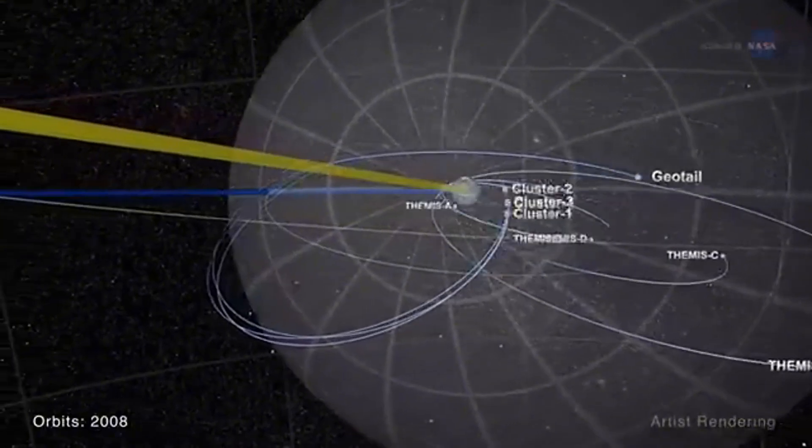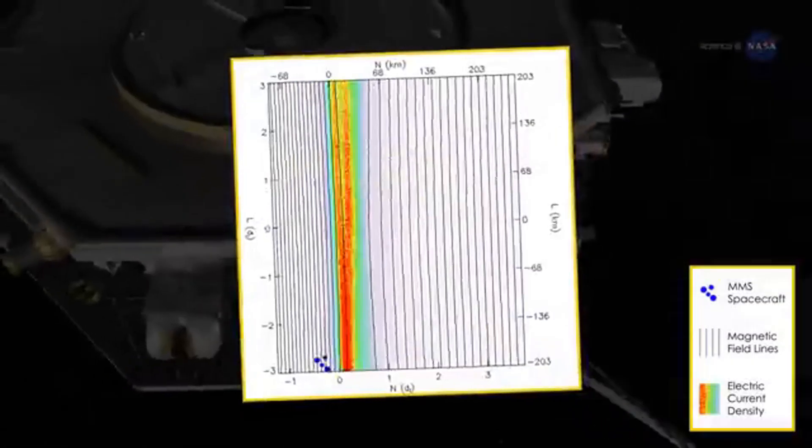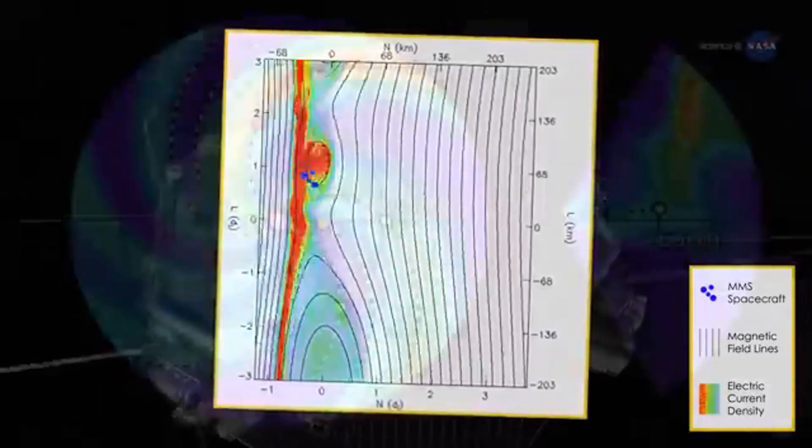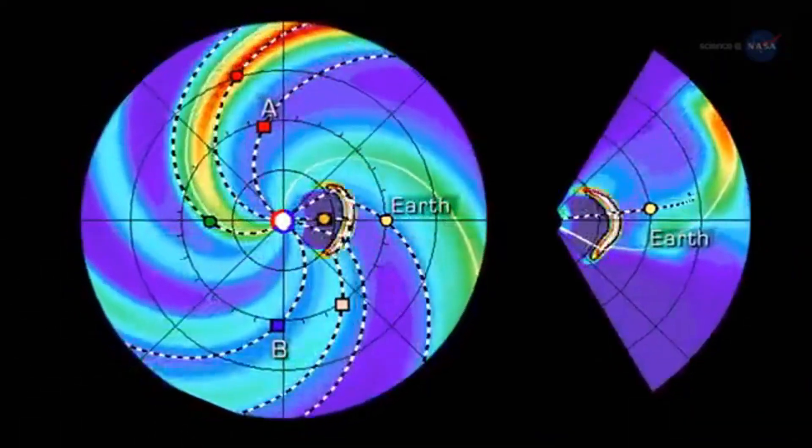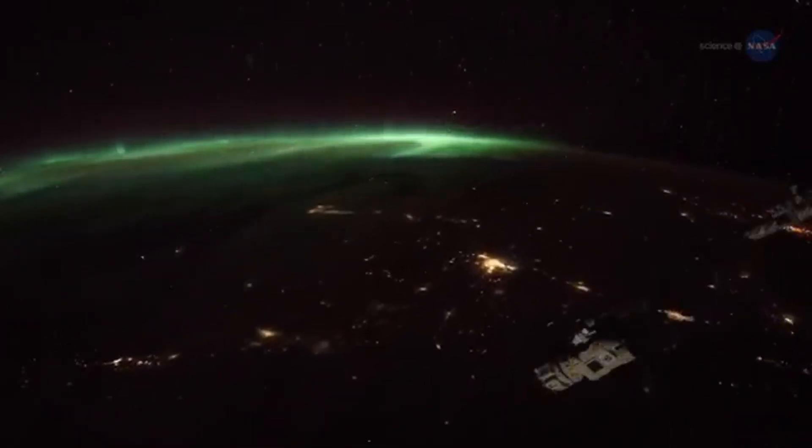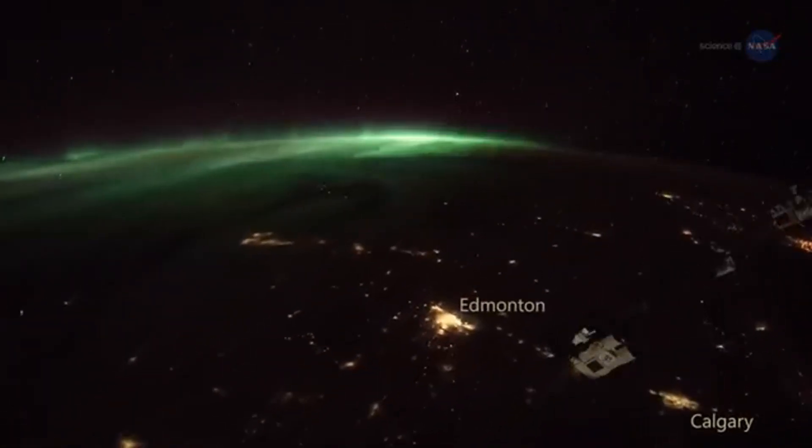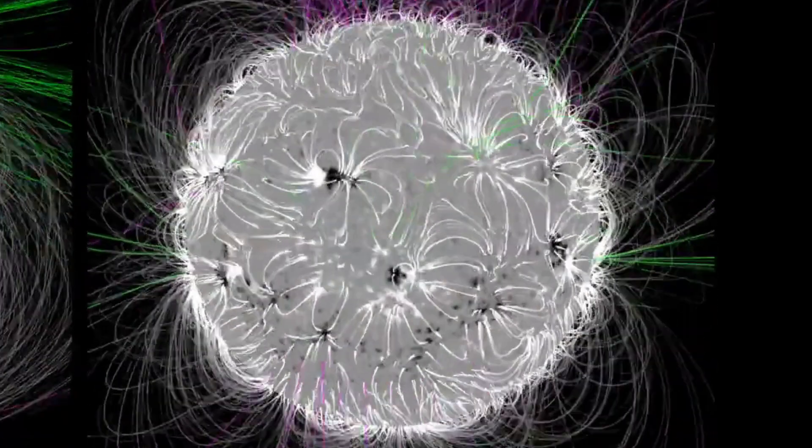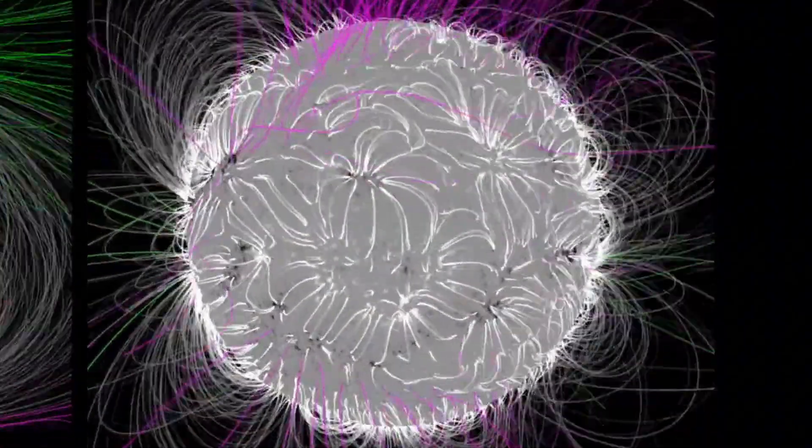Contrary to predictions, activity began to climb rapidly. By 2023, the sunspot count had already doubled the forecasts. In 2024, it produced powerful storms that disrupted communications worldwide and painted the skies with mesmerizing auroras, even at latitudes far from the poles. The sun was not following the expected script.